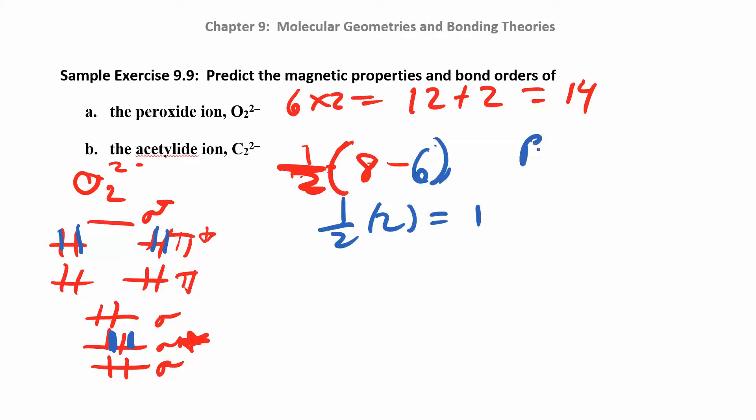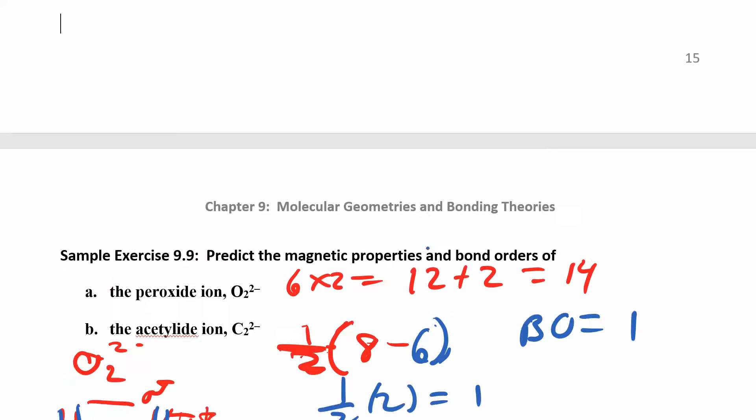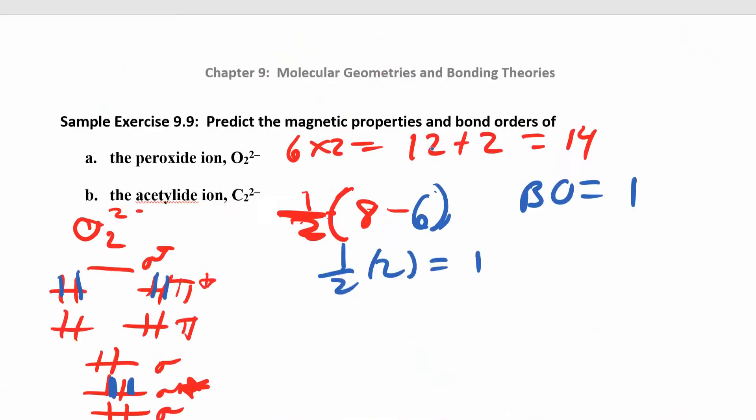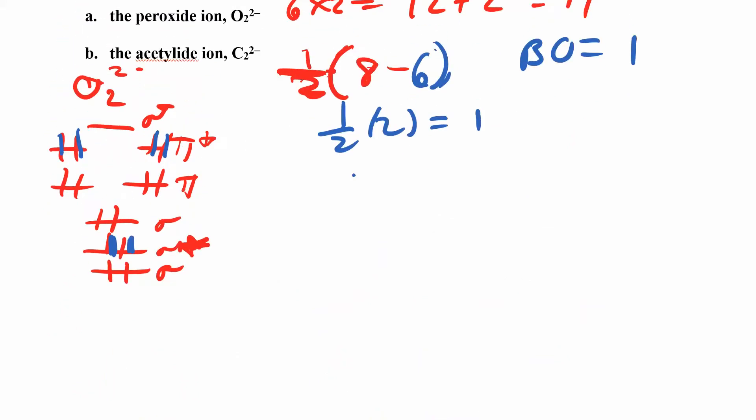I can do the same thing for C2 2 minus. If you go back to carbon, the order is different than it was for oxygen—these two things flip around. For C2, I have sigma, sigma star. This single line is sigma, this one is star. This is pi because it has two lines, and this one is pi star.